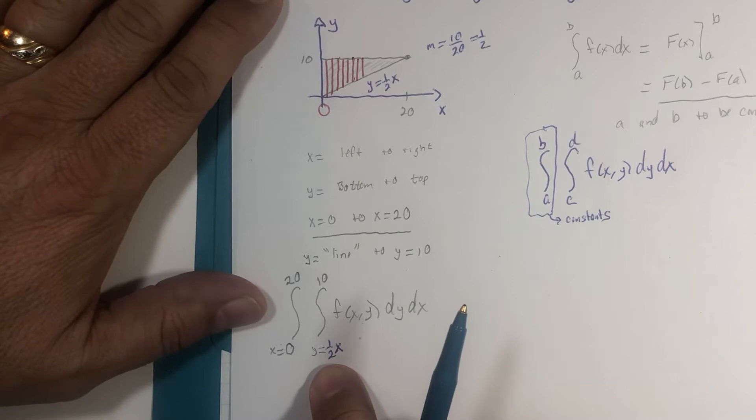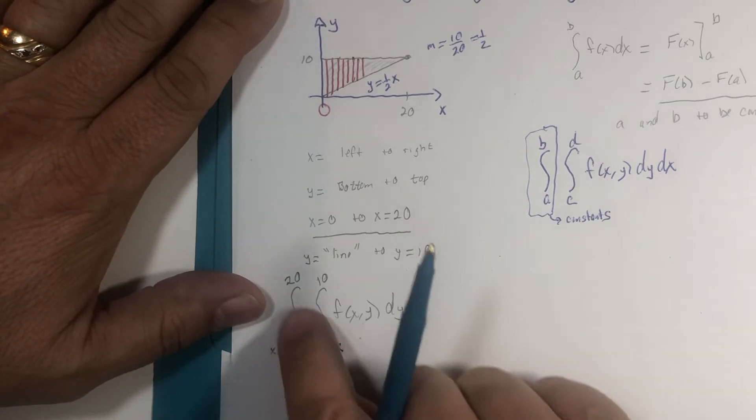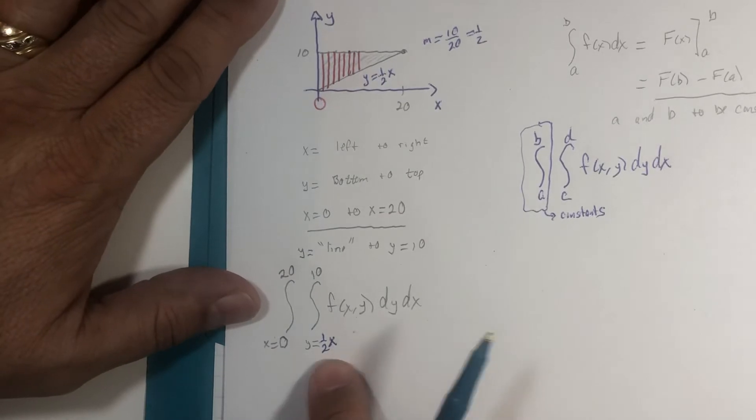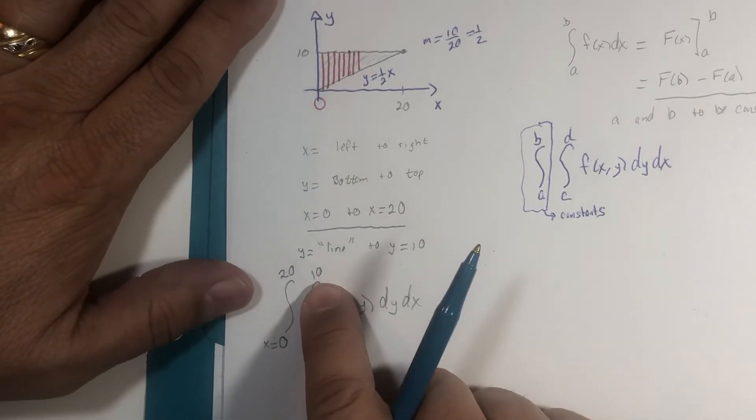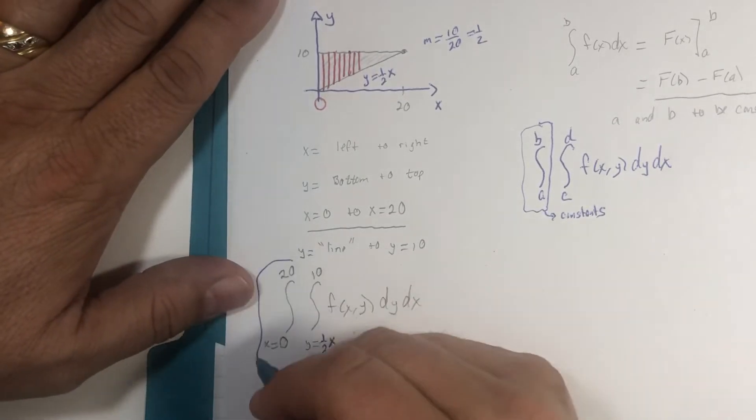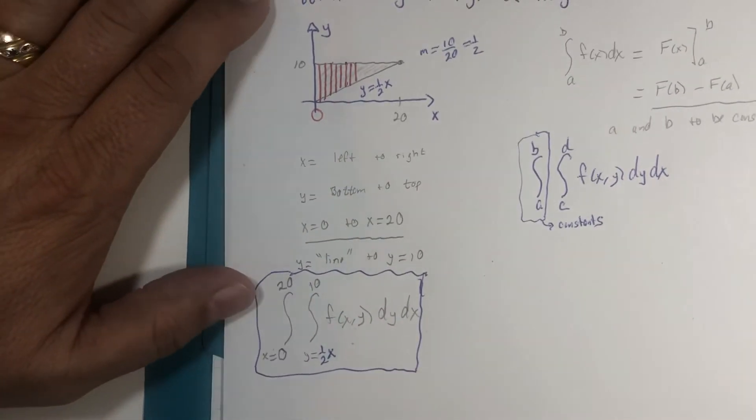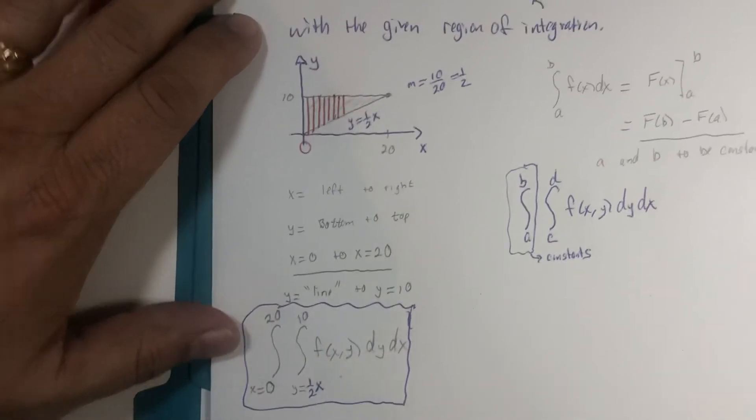That is what we're going to put right here as our lower boundary. This varies as you go left to right. And from left to right, we're going from 0 to 20. But the y values go from this line to upper boundary of 10. So far so good? Okay, good.